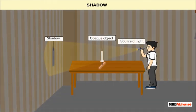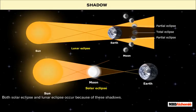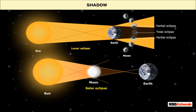A shadow is always formed in the opposite direction of light. Both solar eclipse and lunar eclipse occur because of these shadows. Let us learn about both solar and lunar eclipse.